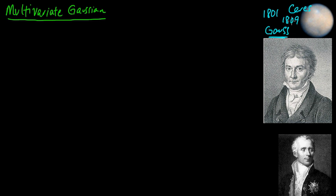In 1809, he wrote up how he did it, and that's where he introduced the Gaussian distribution — at least the univariate Gaussian distribution — maximum likelihood, and also the method of least squares. Just that one paper was monumental. So that's Gauss.